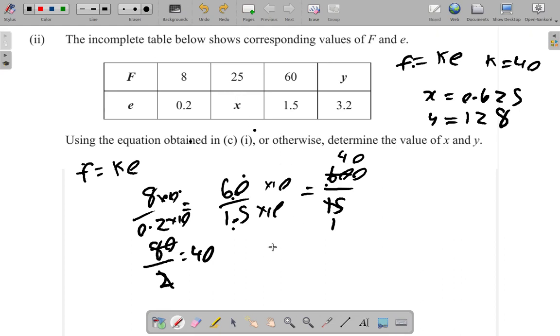By ratio, 8 over 0.2, looking at this, 8 over 0.2 is supposed to be equal to 25 over x. 8 over 0.2 is 40 as we saw here. So 40 is equal to 25 over x. 40 over 1 is equal to 25 over x.